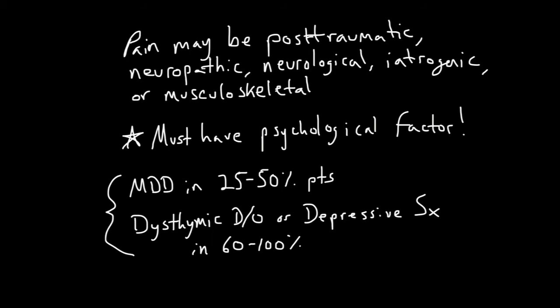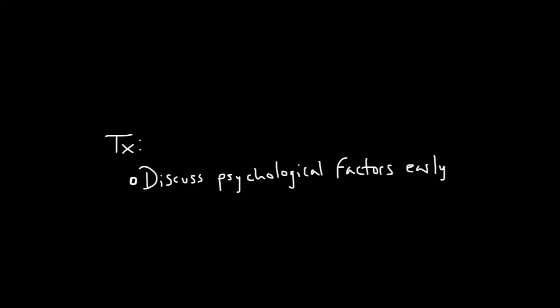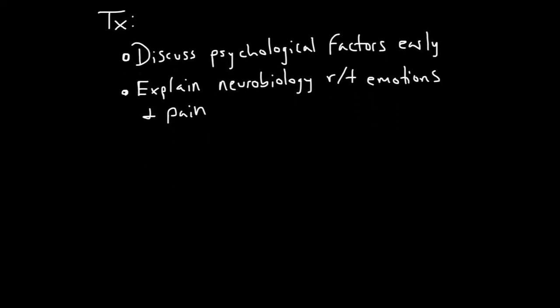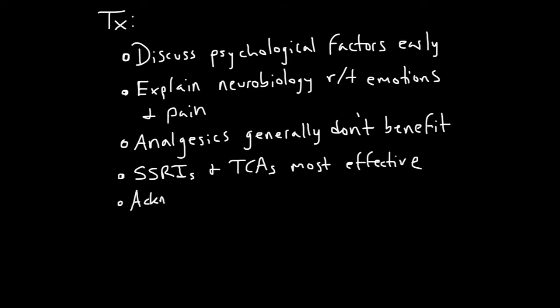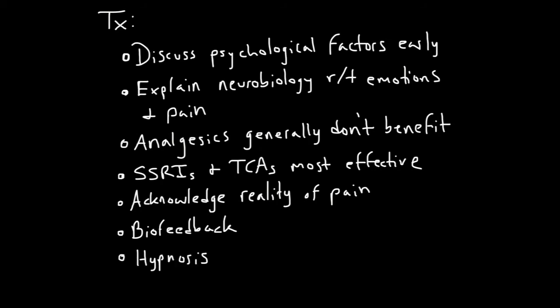While acute pain serves as an adaptive mechanism to seek help and alert the individual to danger, chronic pain always has a psychological variable at play. In the treatment of pain disorder, it's important to discuss the issue of psychological factors early in treatment. Explain how various brain circuits involved with emotions, for instance the limbic system, can influence the sensory pain pathways. Analgesic medications do not generally benefit most patients with pain disorder. SSRIs and tricyclic antidepressants are most effective in treating this disorder. Psychodynamic psychotherapy involves developing an empathetic therapeutic alliance and acknowledgement of the reality of pain for the patient. Alternative therapies include biofeedback, hypnosis, and transneuronal stimulation.